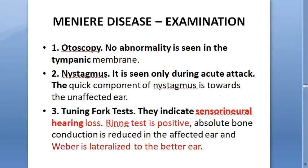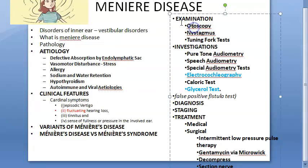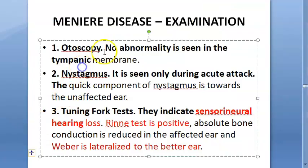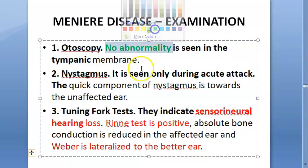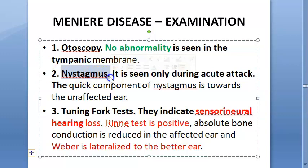Now for examination: you will call the patient and perform tuning fork tests, check hearing, use an otoscope, and check for nystagmus. On otoscopy, no abnormality is seen — the ear looks perfectly fine from outside. Nystagmus is only present during an acute attack of Meniere's disease.